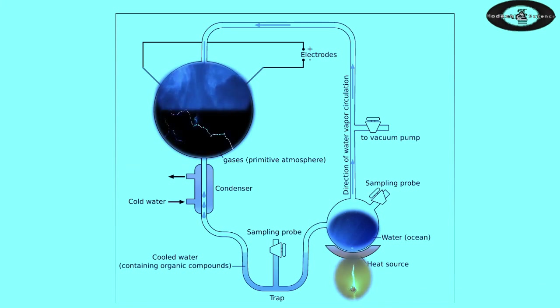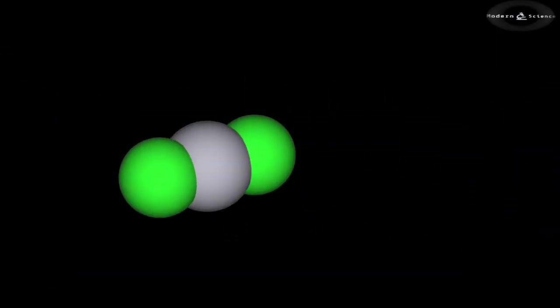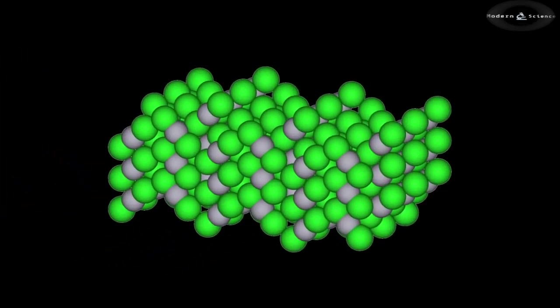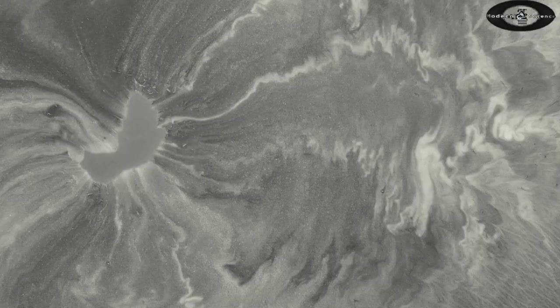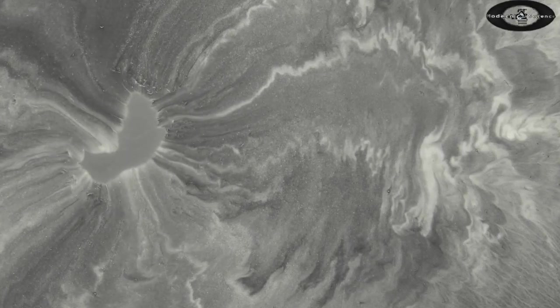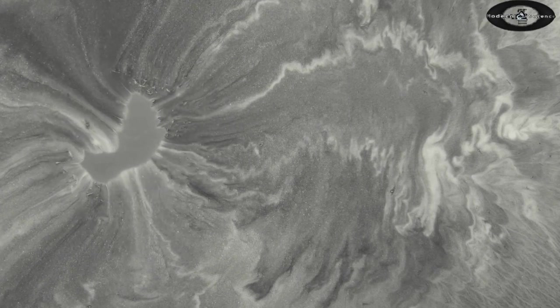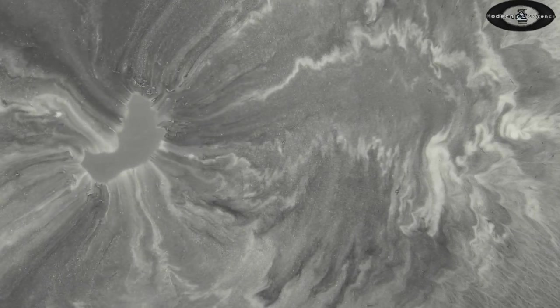After a day, the solution collected at the trap had turned pink in color. And after a week of continuous operation, the solution was deep red and turbid. The boiling flask was then removed and mercury chloride was added to prevent microbial contamination. The reaction was stopped by adding barium hydroxide and sulfuric acid and evaporated to remove impurities. Miller identified five amino acids present in the solution.